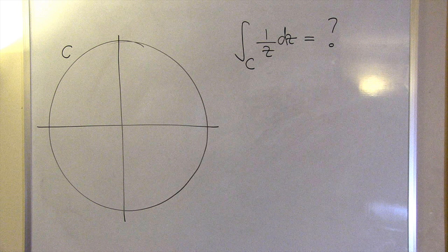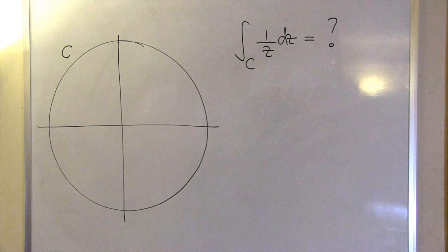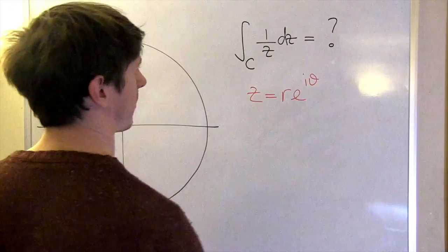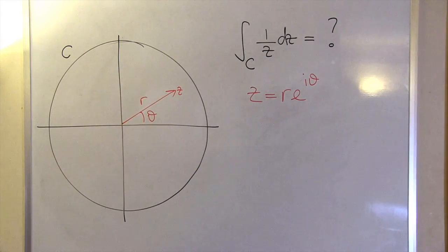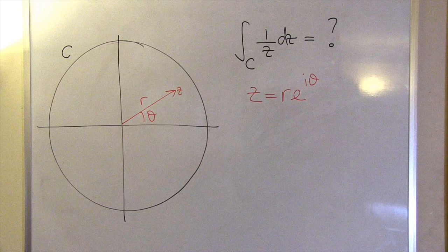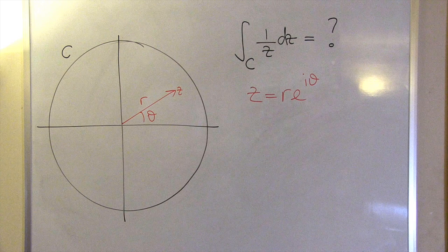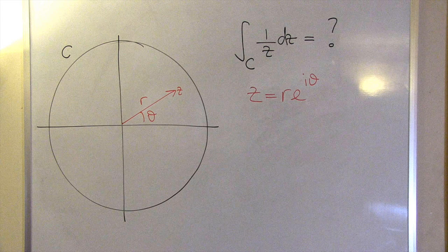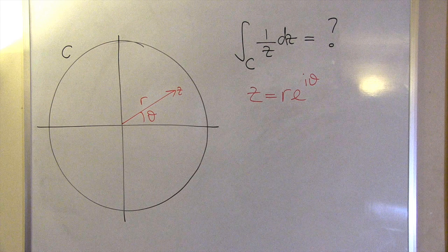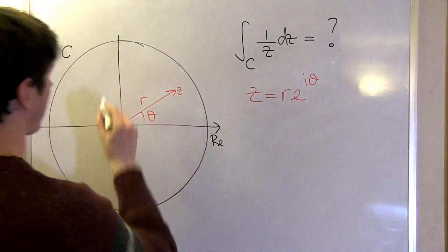Any complex number can be written in the form r times e to the i theta and can be thought of either as a vector of length r making an angle theta with the x-axis, or as the spot on the graph that the vector is pointing to. So this two-dimensional space is full of complex numbers, and I can't see any reason why one over z would be undefined on C, for example our circular contour of radius a.